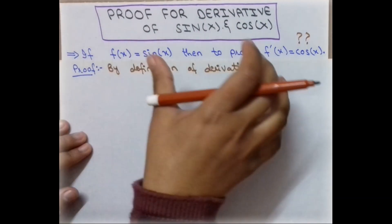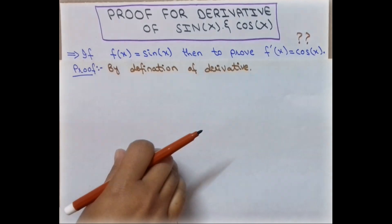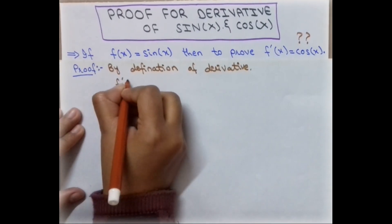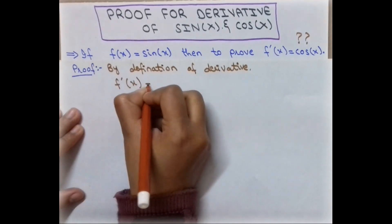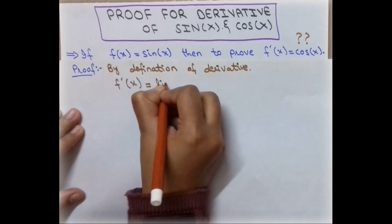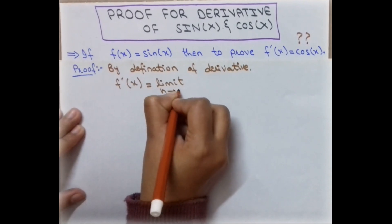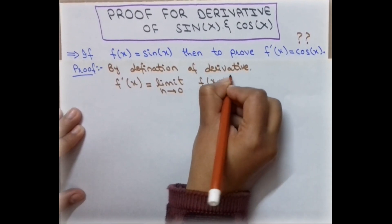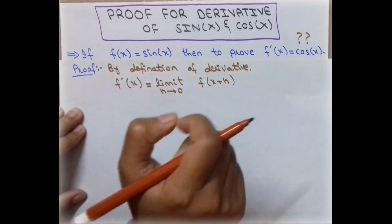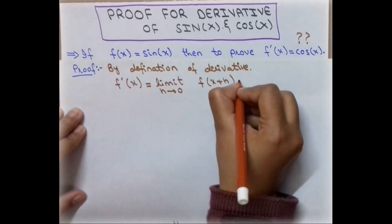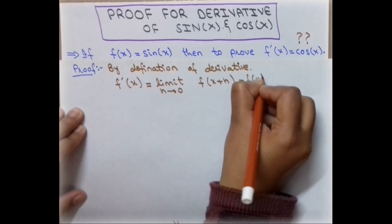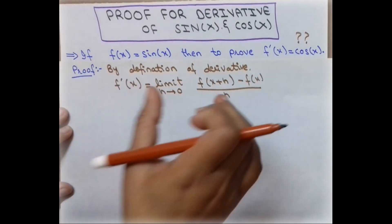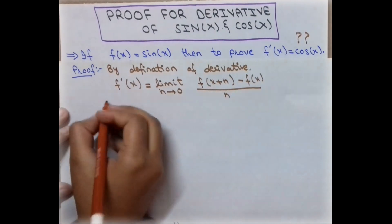By the definition of the derivative, we will prove this using the first principle method. By the definition of the derivative, it equals the limit as h approaches zero of f(x+h) minus f(x), divided by h, where h is a very small change in x.